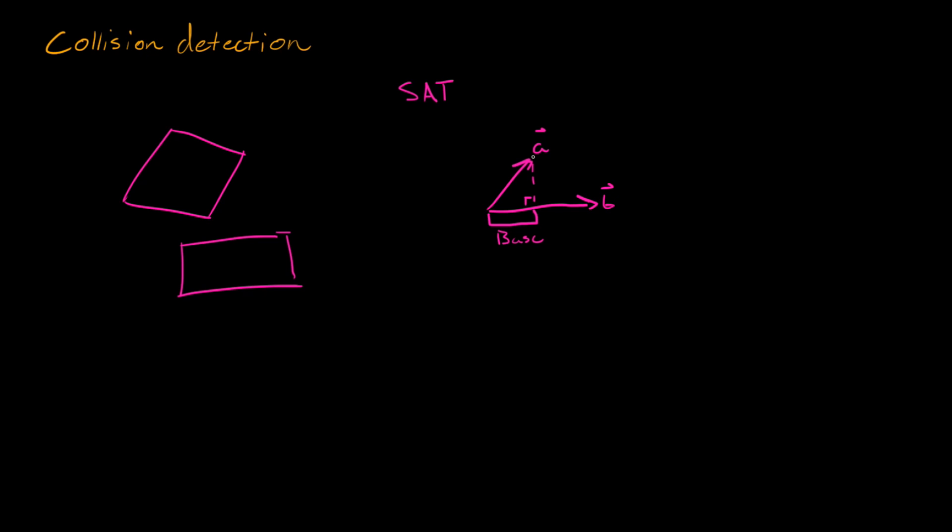So if we draw a little right triangle here, the projection is this length, the base, so to speak, of this right triangle. If we were to do the projection of B onto A, well then we'd extend that A vector. For the purpose of visualization we're going to say it extends, and we draw, once again, the right triangle from B. In terms of the projection of B onto A, it's this base. And that's also the projection.